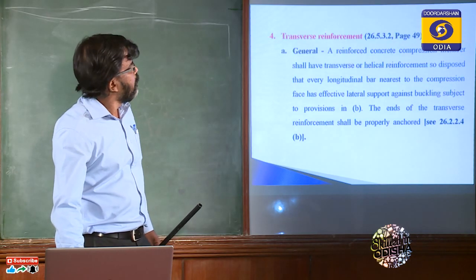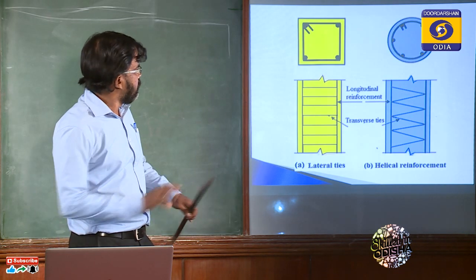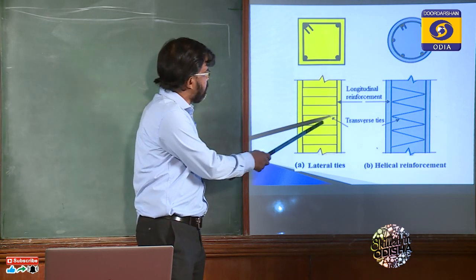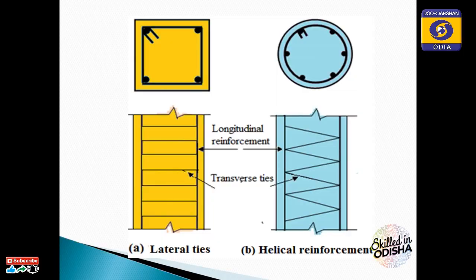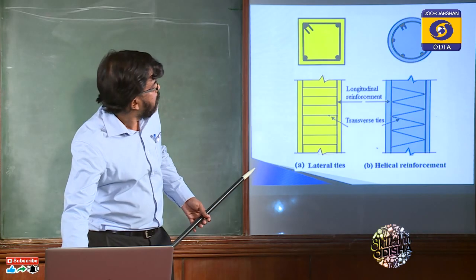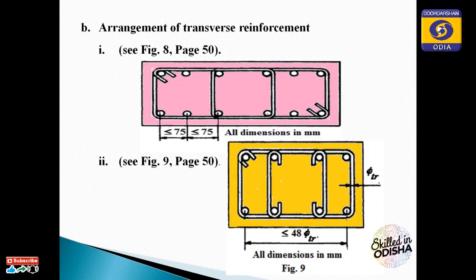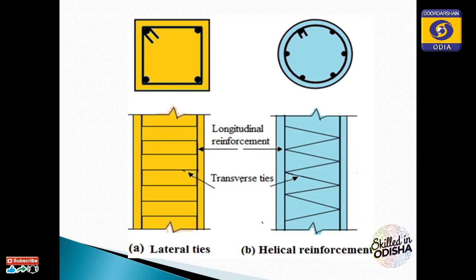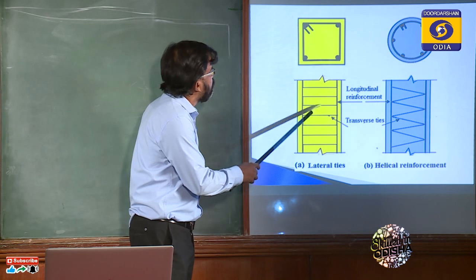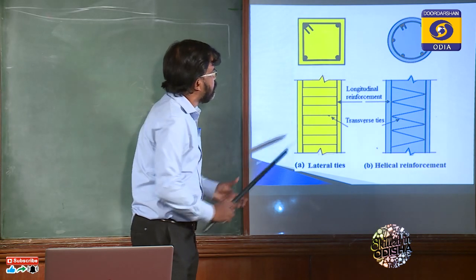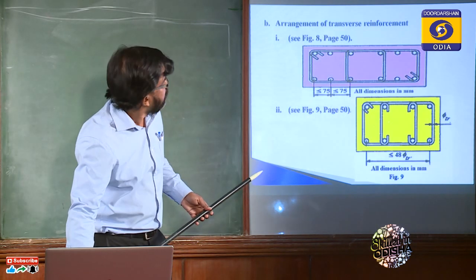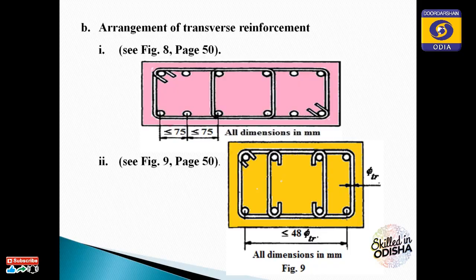Transverse reinforcement, as you know, binds together the longitudinal reinforcement so that the column does not burst out. The arrangement of transverse reinforcement has a particular spacing between the transverse reinforcements — this is the vertical distance between the two transverse reinforcements. Regarding these, we will be discussing the codal provision of transverse reinforcement.